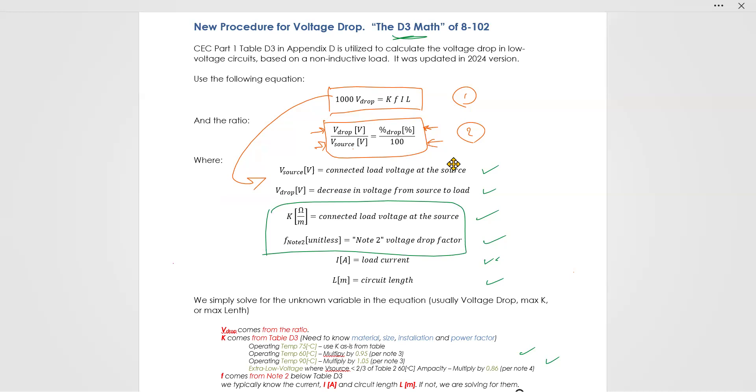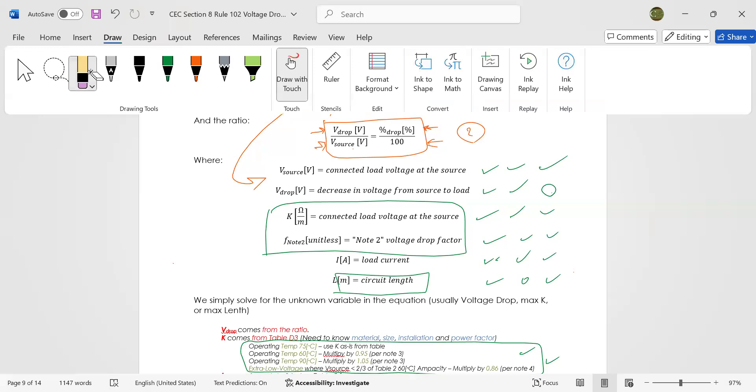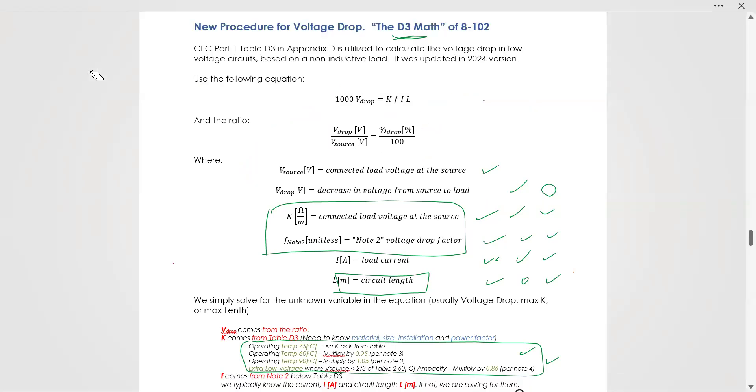There's a couple more possible factors down here. And what we do then is we will know some of these, and then we solve for the unknown. Let's say we know all of this - how long can that circuit actually be? Or let's say we know the length and all of this - how much is that voltage going to drop? We're simply just using an equation, and we're solving for the unknowns, just like any other math. It's quite easy to do.